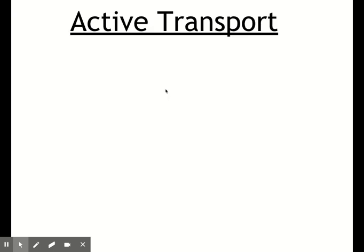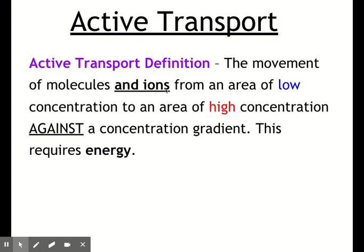With the active transport definition, there are quite a few changes from the two we looked at previously — most are the opposite of the diffusion definition. First, we still see movement of molecules, but we've now added ions too. So movement of molecules and ions is how we start. Instead of moving from high to low concentration like before, we're now moving from low to high. This goes against the concentration gradient instead of down. The big difference between active and passive transport is that active transport requires energy. So the definition is: the movement of molecules and ions from an area of low concentration to an area of high concentration, against the concentration gradient, and this requires energy.